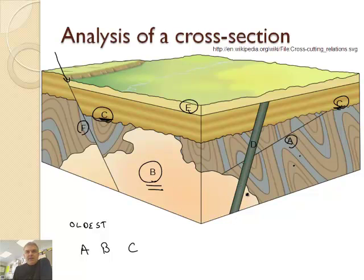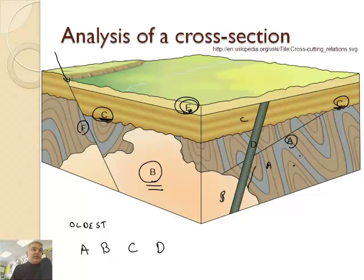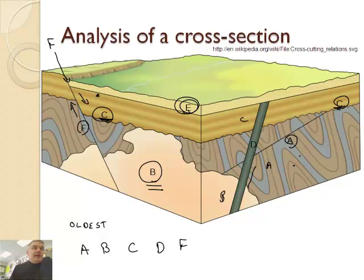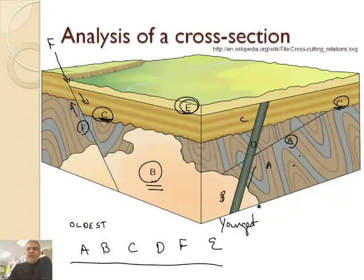Then D occurs because D is cross-cutting — see how D goes through A, through B, and through C. So D is younger than all of those. Then the next thing that happens is the fault, F, which occurs here. And then lastly we get E. So A is the oldest and E is the youngest feature. Hopefully that makes sense. We're going to do several of these — you should either sketch them or print them.